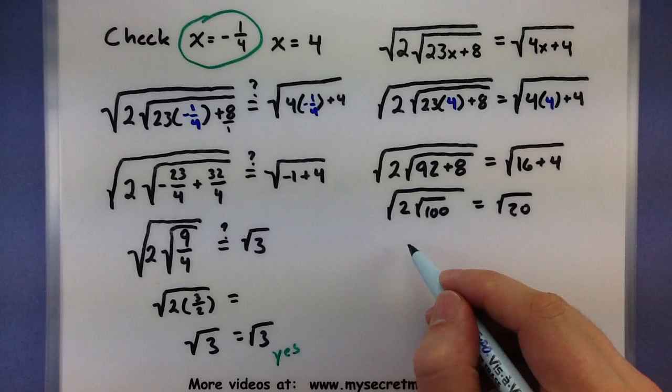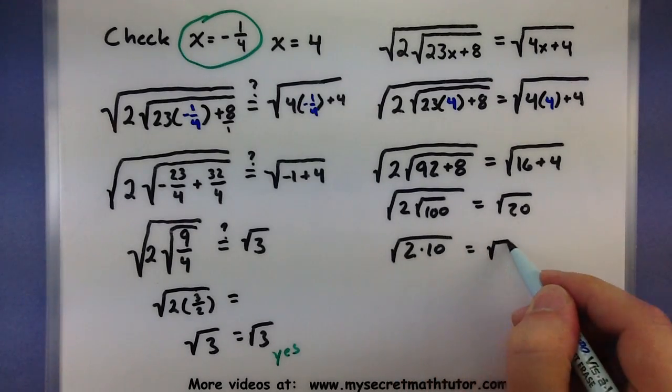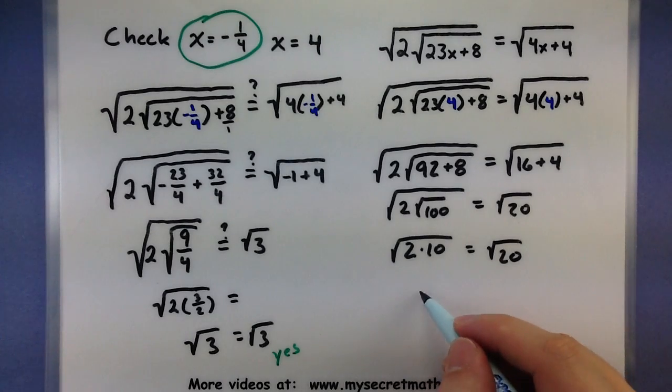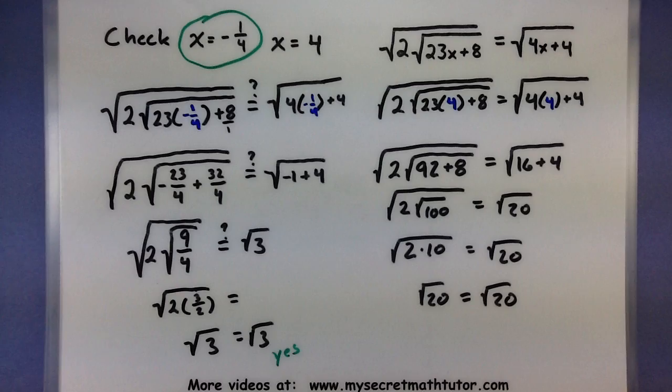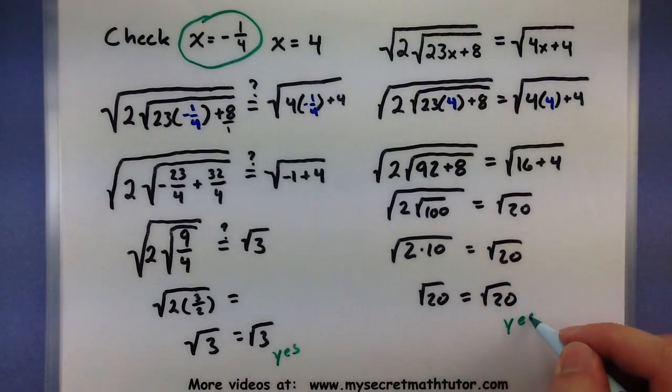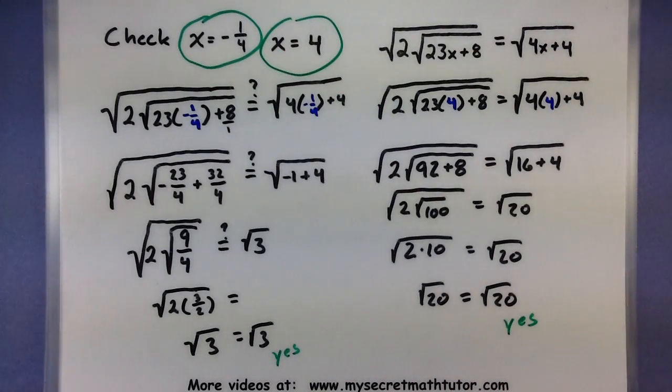Almost there. Square root of 100 is 10. Now, I think things are looking pretty good. Square root of 20 equals square root of 20. It looks like this one also worked out. We're in good shape. So, this one has two solutions. X is equal to a negative 1 fourth. And X is also equal to a 4. Both of those are valid solutions. Let's look at one more example. That way, you have the process down pat.